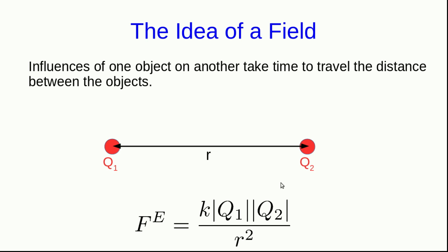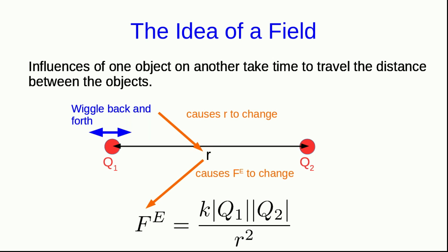This is relevant to thinking about interactions between charged particles. Suppose we have two particles, Q1 and Q2. Then Q1 will exert a force on Q2, which we believe is given by Coulomb's law. But suppose we wiggle Q1 back and forth. The force that it exerts on Q2 depends on the distance r, and if we wiggle Q1 back and forth, that distance changes. That ought to cause the electric force to change, and in fact it does.